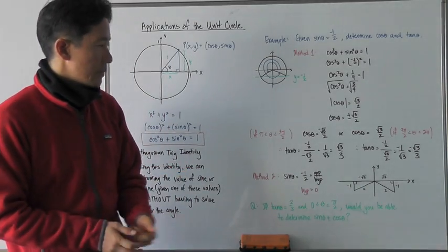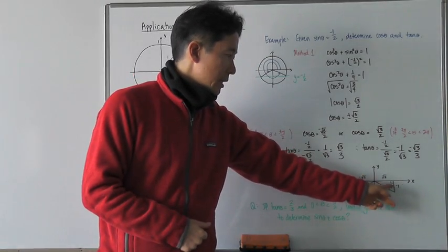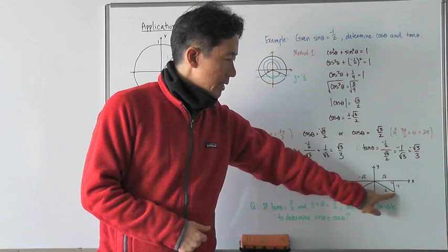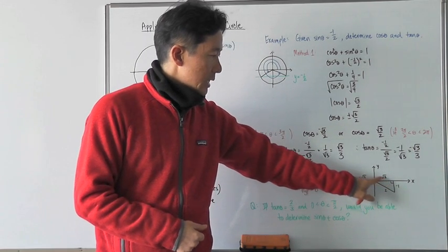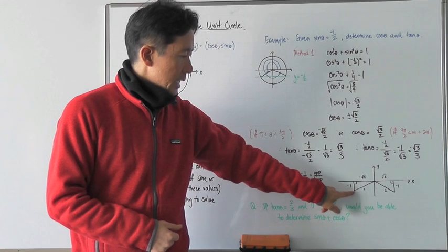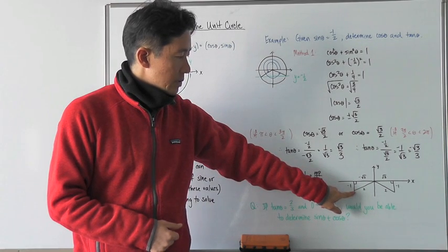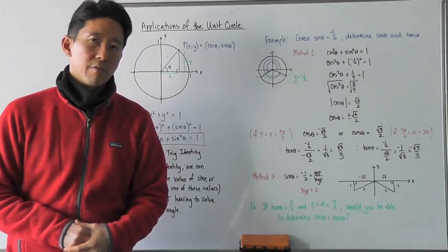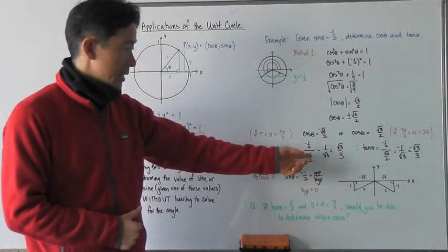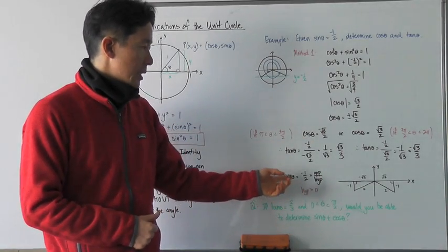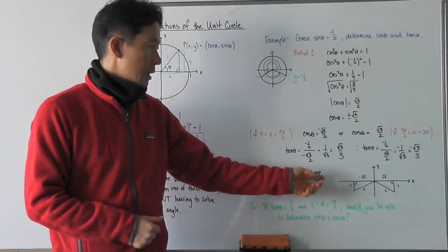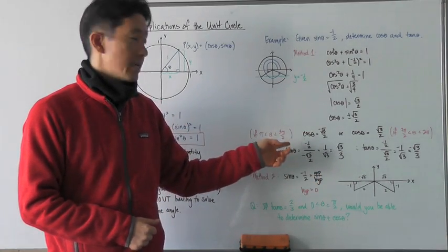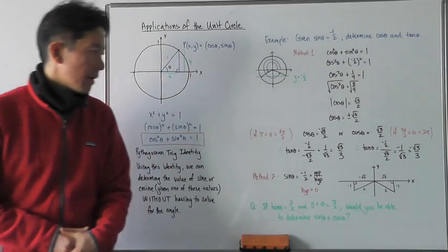Using the Pythagorean theorem, I can determine that the x values are going to be equal to plus or minus the square root of three. The point in the fourth quadrant has a positive x value, while the point associated with the third quadrant has a negative x value — negative root three. Therefore, I can use right triangle trigonometry definitions to determine cosine theta and tangent theta.